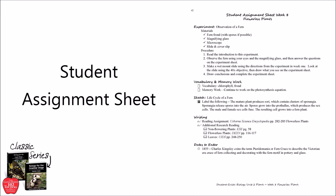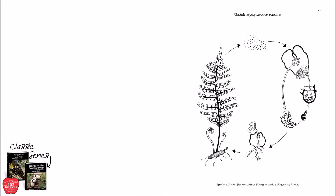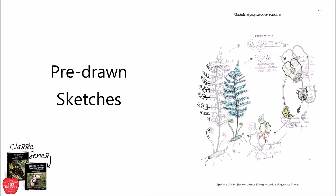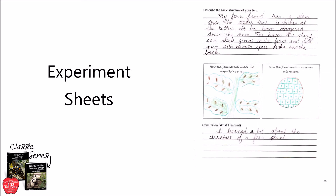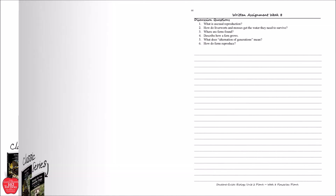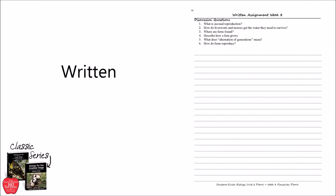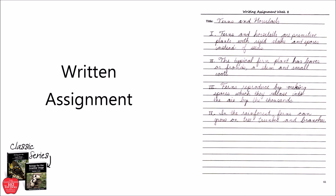First, you will see the exact same student assignment sheet that was in the teacher's guide. On the next page, you will find a pre-drawn sketch ready for the students to color and label with the information from the student assignment sheet. Flip the page and you will see a customized experiment sheet complete with introduction and space to record any observations or results from the experiment. After that, you will find the blank writing assignment sheets for your student to use when they are completing their written assignments. These are very open-ended, so you can have your student write a list of facts, an outline, or a summary of what they've learned.